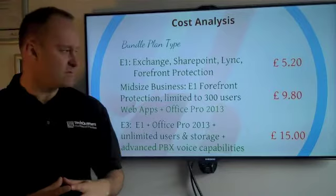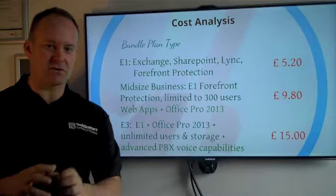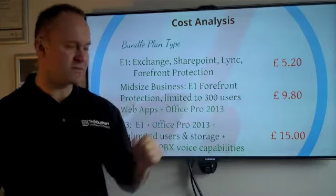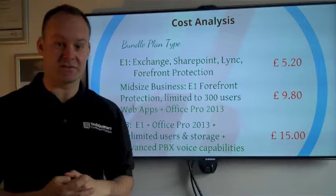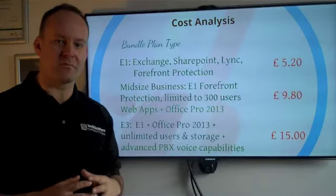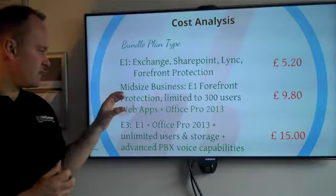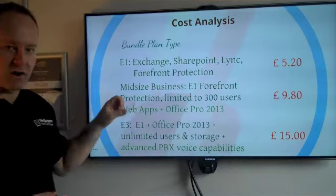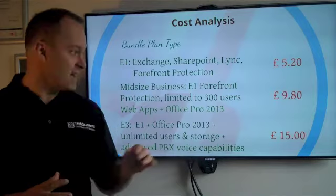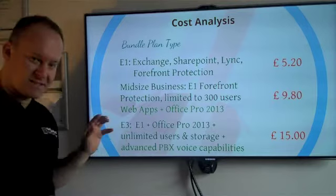Let's talk about the cost analysis. You can buy these products with Office 365 in bundles or as separates. The bundle plan is called an E1 to start with and that's £5.20. The more you step up your plans, the more you get included. So £5.20 gives you Exchange, SharePoint, Lync, and Forefront Protection. The mid-size plan — a new plan Microsoft have released — gives you the ability to buy this plan for up to 300 users. It's the E1, but it also includes a copy of Office Pro Plus 2013 for less than a tenner a month per user. That's incredible.